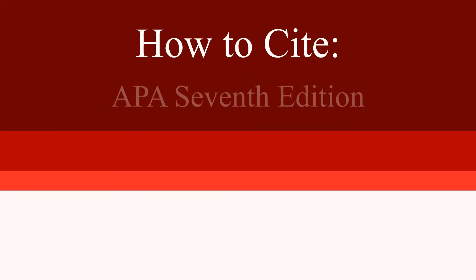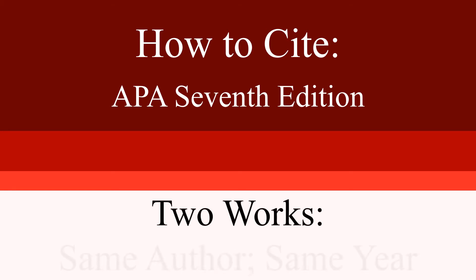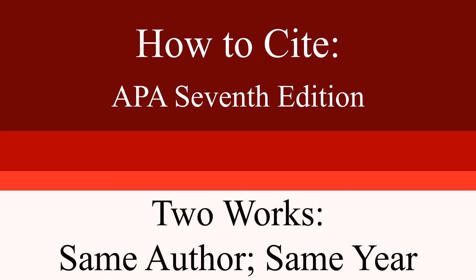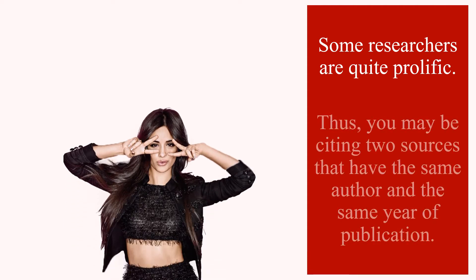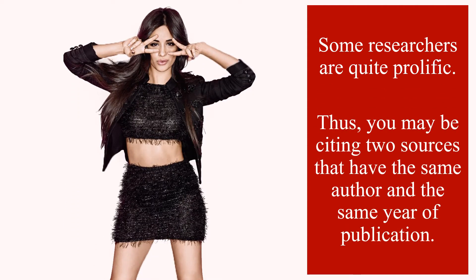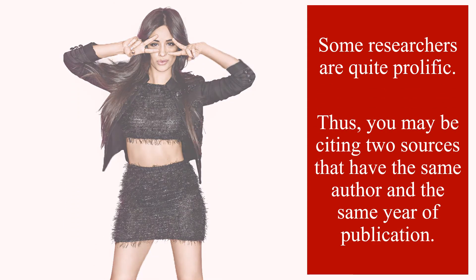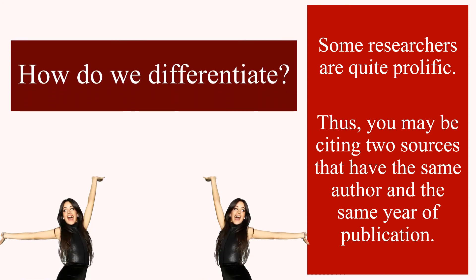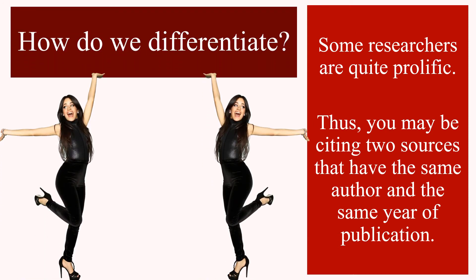How to cite APA 7th edition. Today we are going to outline how you can create in-text citations for two works that have the same author and the same year of publication. Some researchers are quite prolific, thus you may be citing two sources that have the same author and the same year of publication. How do we cite these sources?